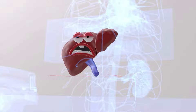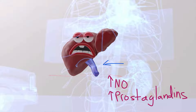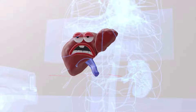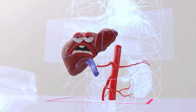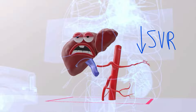The portal vein is responsible for carrying blood from the splanchnic circulation to carry nutrients to feed the liver. In order to relieve this pressure on the portal vein, nitric oxide and prostaglandins are released, most notably in the splanchnic circulation. Here we have various arteries and vessels of the splanchnic circulation being vasodilated by nitric oxide and prostaglandins. This leads to an overall systemic decreased vascular resistance.